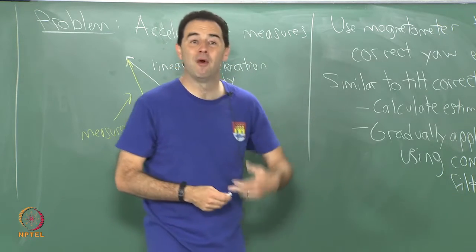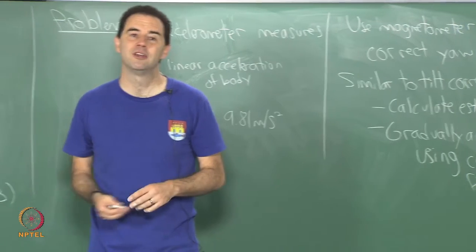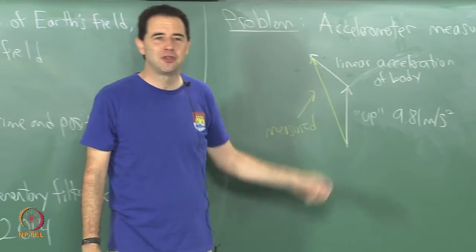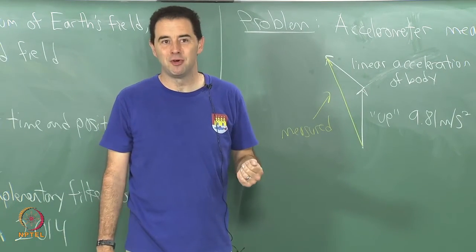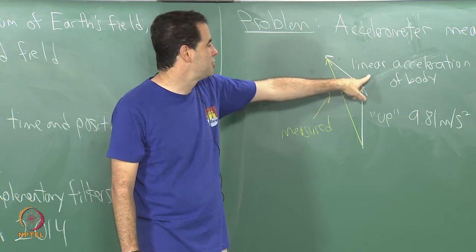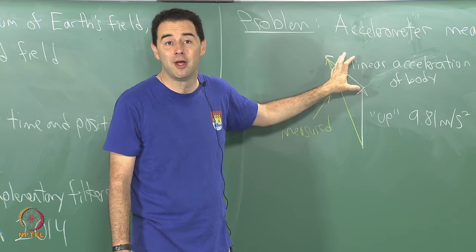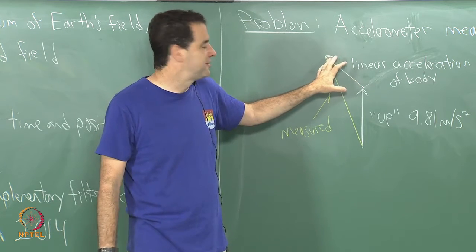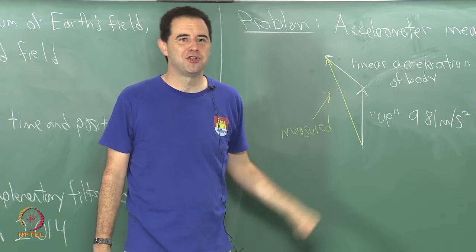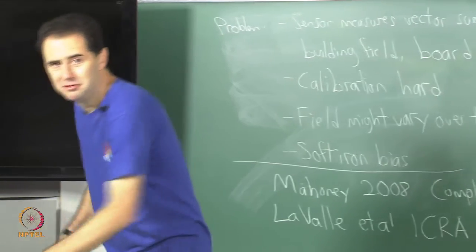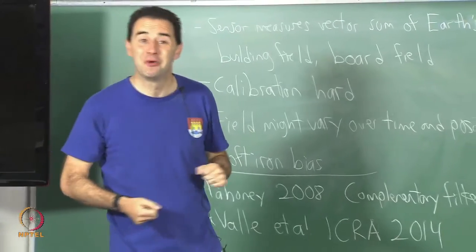If you want to estimate position, what more do we need in addition to orientation? You can fake some of the position. If you studied purely in textbooks, you might say: I figured out how to separate gravity from linear acceleration of the body — why not just take this linear acceleration component, integrate it once to get velocity, integrate it twice and get position. So I can figure out what your position is from that. But there are difficulties, which motivate why one might want to use cameras and other more sophisticated sensors.